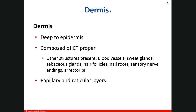A couple of things about the dermis. This is the deeper of the two layers — it is deep to the epidermis. Whereas the epidermis was epithelial tissue, the dermis is going to have all types of tissue. Predominantly it's going to be made up of connective tissue proper, which is broken down into loose connective tissue and dense connective tissue.